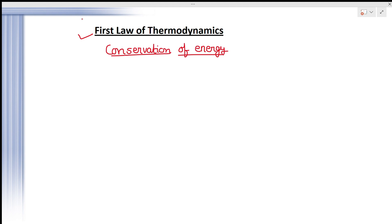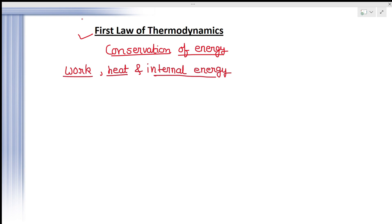The first law of thermodynamics is based on three things: heat, work, and internal energy. If you have not studied these topics, you can watch our separate videos on work, heat, and internal energy where I explain the sign conventions. After watching those, you can return to this video. The first law says work and heat are transformable into each other.